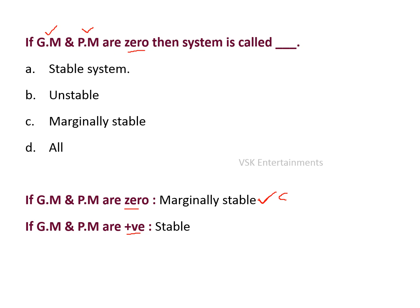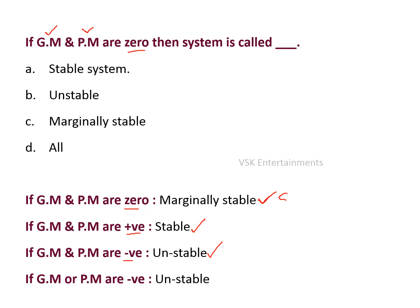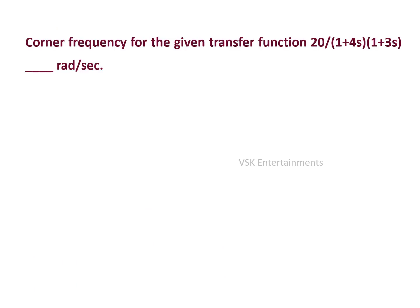If gain margin and phase margin are positive, then the system is stable. If gain margin and phase margin are negative, then the system is unstable. If gain margin or phase margin — any one — is negative, then also the system is called unstable. This is very important from a GATE point of view. Since gain margin and phase margin are both zero, the system is marginally stable — option C is the right answer.